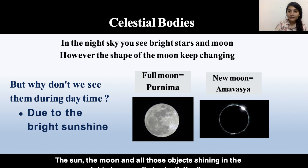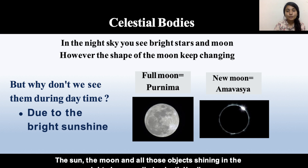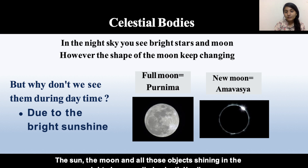The first topic is celestial bodies. The Sun, Moon, and all those objects that we see in the night sky are known as celestial bodies. A common question is: why are they only seen at night? This is because the sunshine on Earth — since the Sun is so bright, we do not see other celestial bodies in the day, only at night.